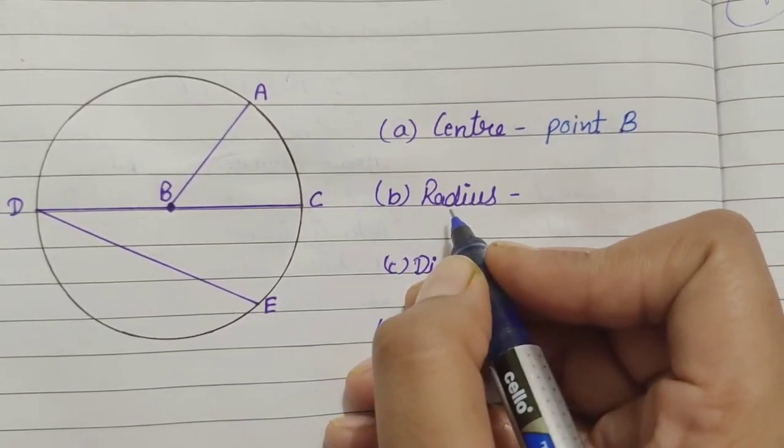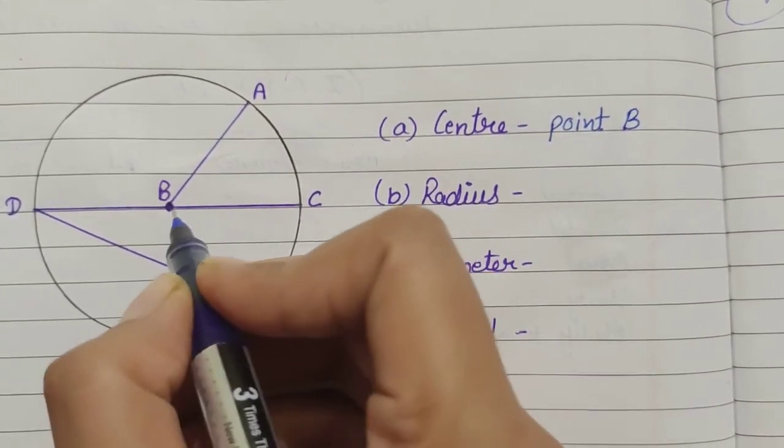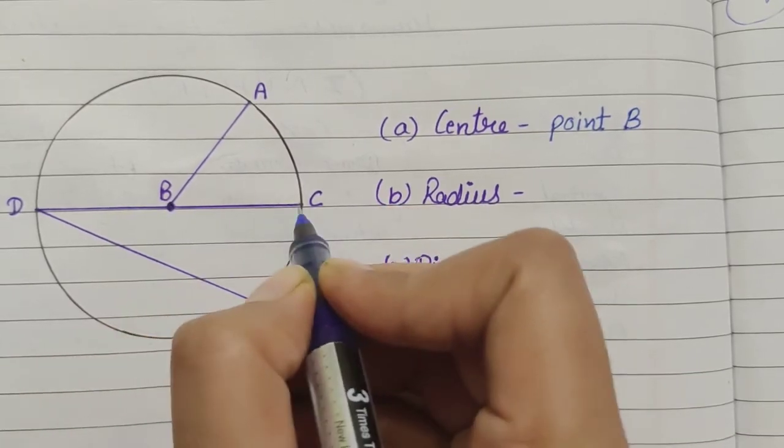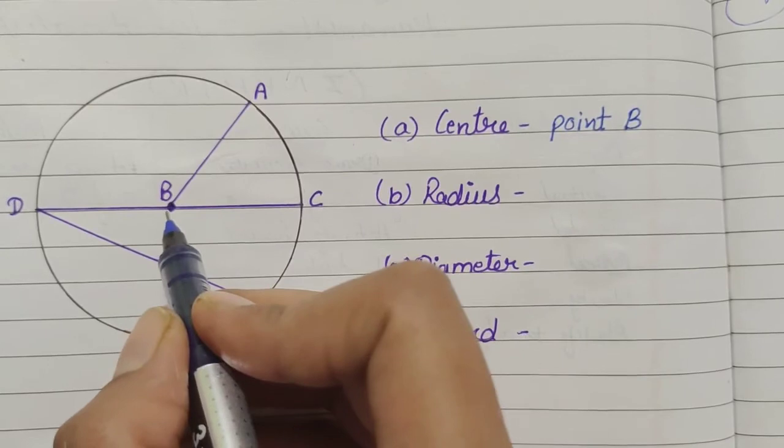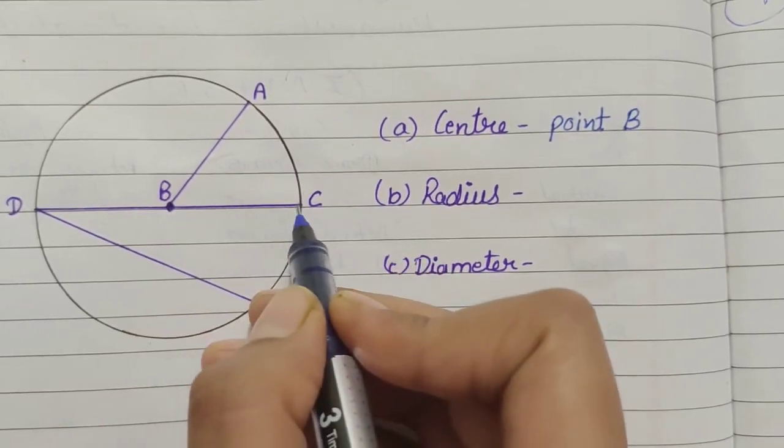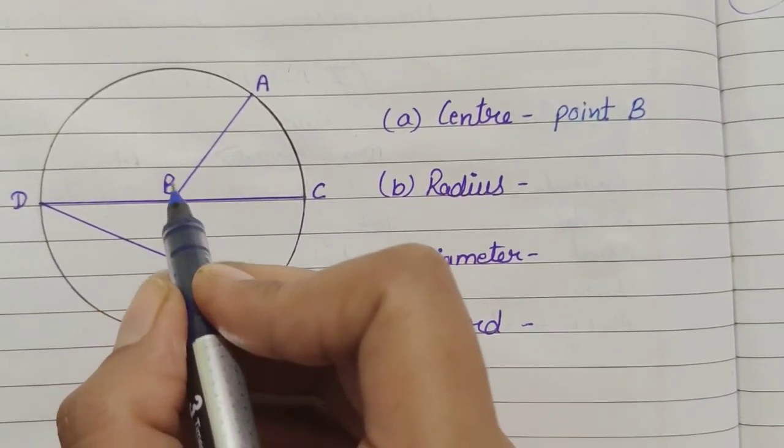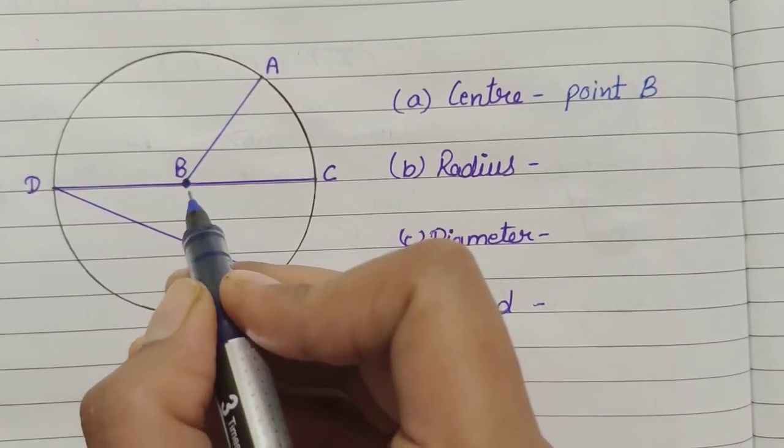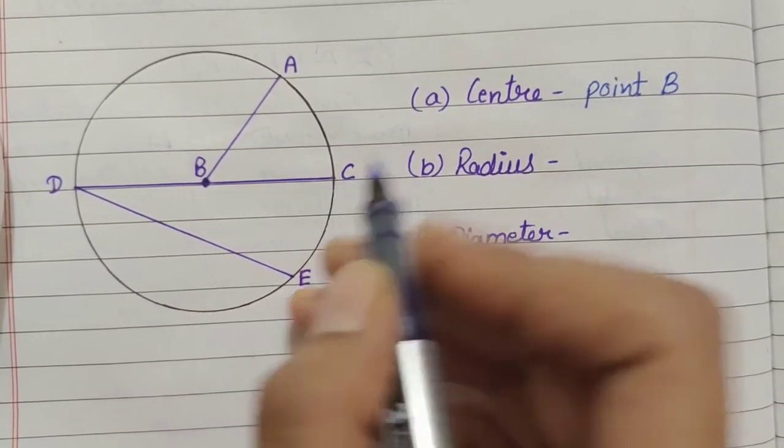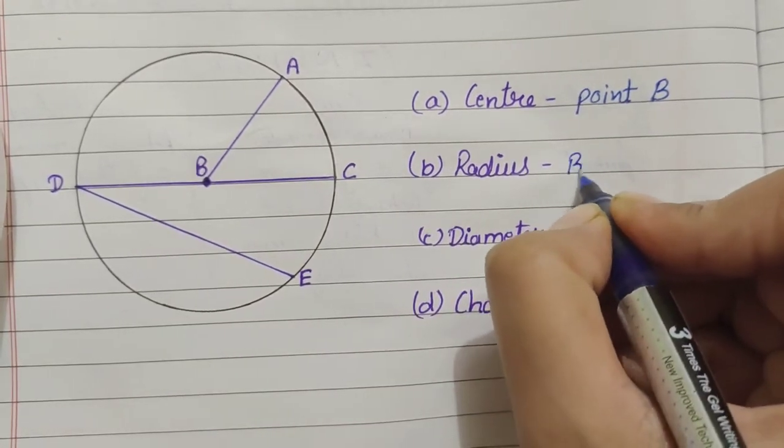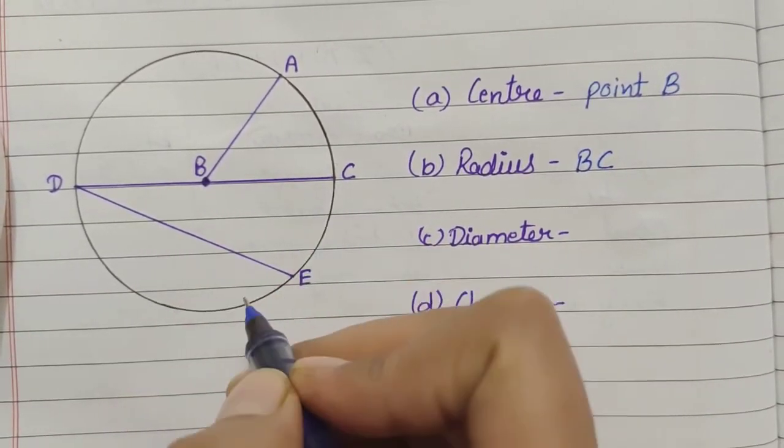Now, look at the radius. Radius is from center to circumference. Right? This distance. So, it must be B, C. Now, let's say this. First alphabet B and then C. This is how you will name it. So, B, C is a radius of the circle.